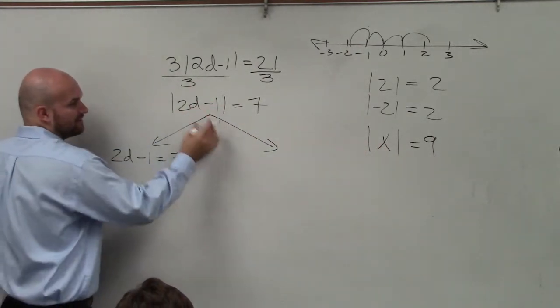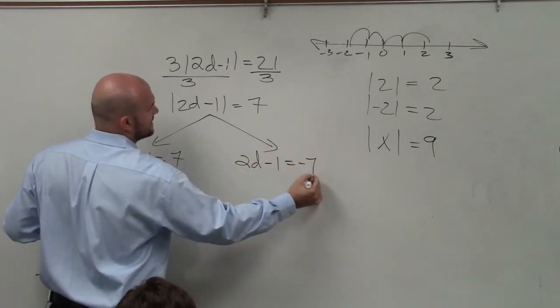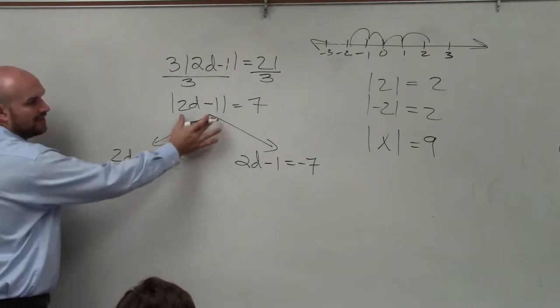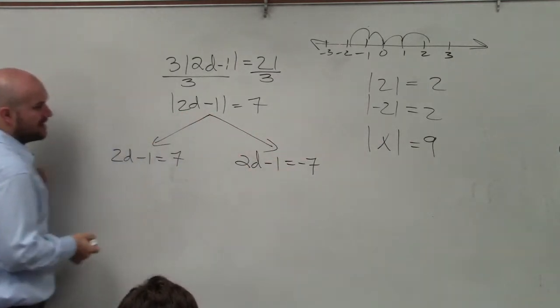The next one is now I need to write for the negative. So to find the negative case, I just negate the other side of the equation. Whatever was inside the absolute value remains the same, but I just negate the other side.